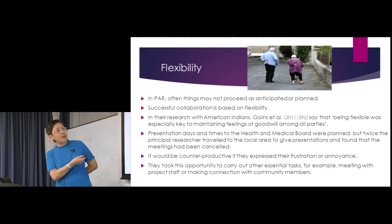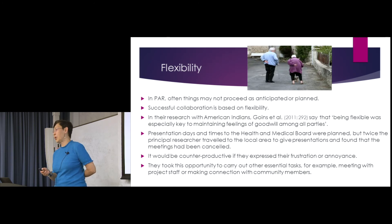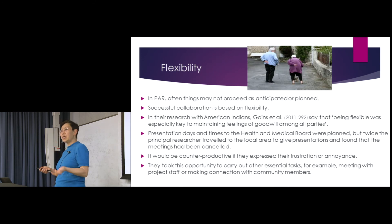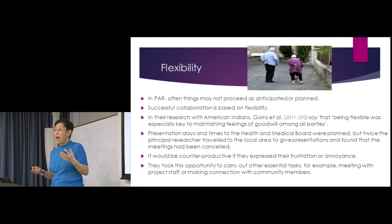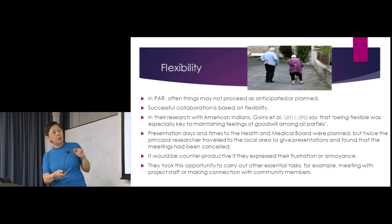This is very important — in PAR, things may not proceed as your anticipation or plan. It happens all the time. You think data collection is going to finish by a certain date, but then it may be another five months before you get it done, because you collaborate with and involve too many people. With older persons, because of their illness and other issues, it won't run on time. Be aware of this and be flexible, though you might run into problems with your funding agencies around time.